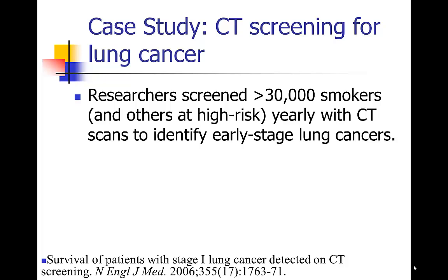It's controversial, though, because some people believe that what you're identifying in most cases — when you're identifying very early cancers — are cancers that actually would not have gone on to kill the person or even affect their lives; they're very slow growing. So you may end up doing some over-screening and over-treating. There's a lot of controversy about this technique, but a paper came out in the New England Journal of Medicine in 2006 which seemed to show at first pass that CT scanning was indeed effective.